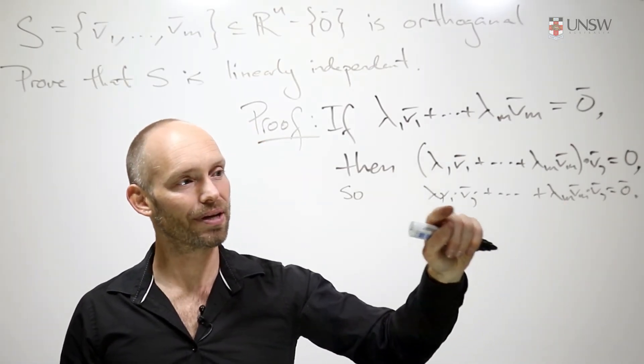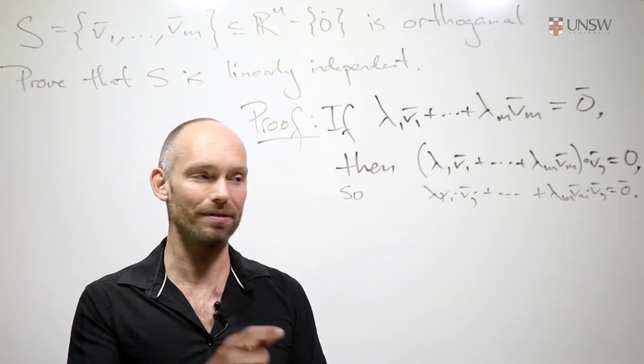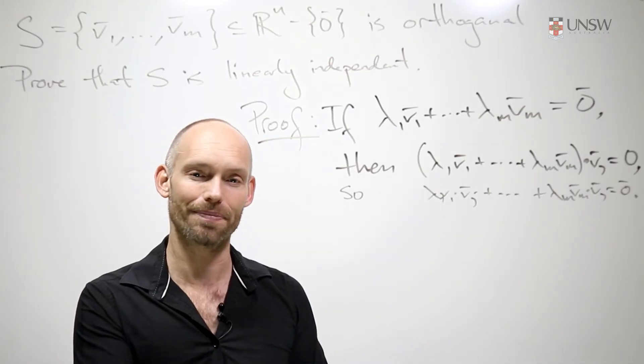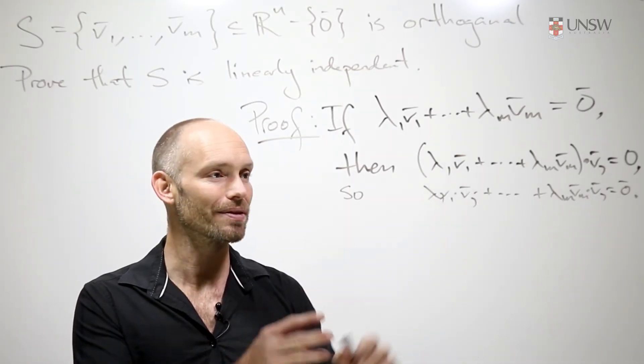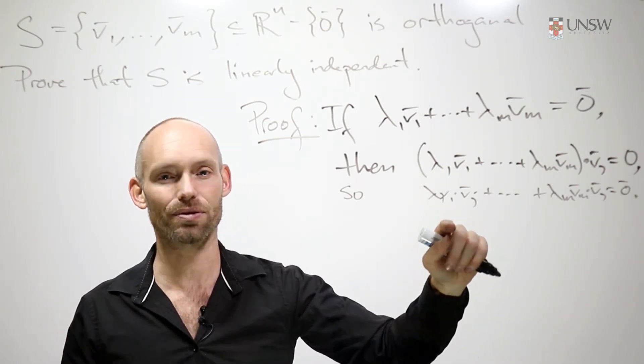So whenever we have v_i where i is not j, then those two vectors, v_i and v_j, dotted together will give zero. So in fact, all of these terms are zero except for one, and that's the term where we have v_j dotted with itself.